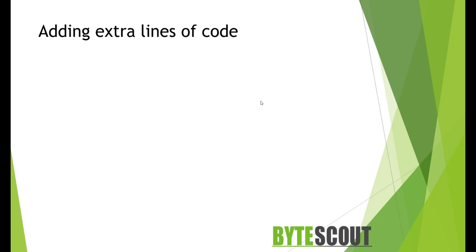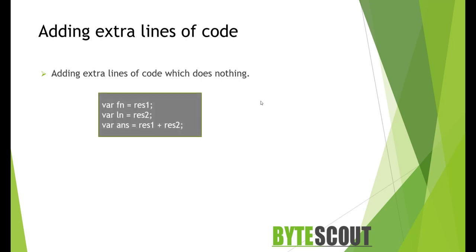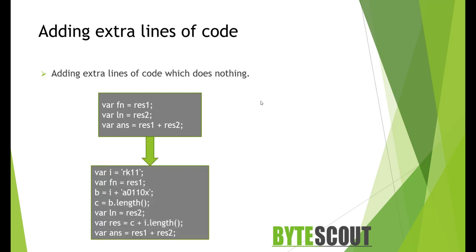And the next is adding extra lines of code into the main code. So in this case, we need to insert some extra code into our script that does nothing. This is just to confuse an analyst. So if you have this type of code, then the final code would look like this.